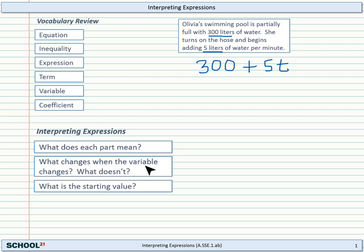For instance, what changes when the variable changes and what doesn't? Well, the total amount of water in the pool will change as T changes. But certain things don't change. The starting value doesn't change when T changes. It just stays at 300. And the amount per minute doesn't change either. So this 5 doesn't change. This term, though, will also change. So as T changes, this term changes, but this one doesn't. And it's important to understand how an expression is working as the variable changes.